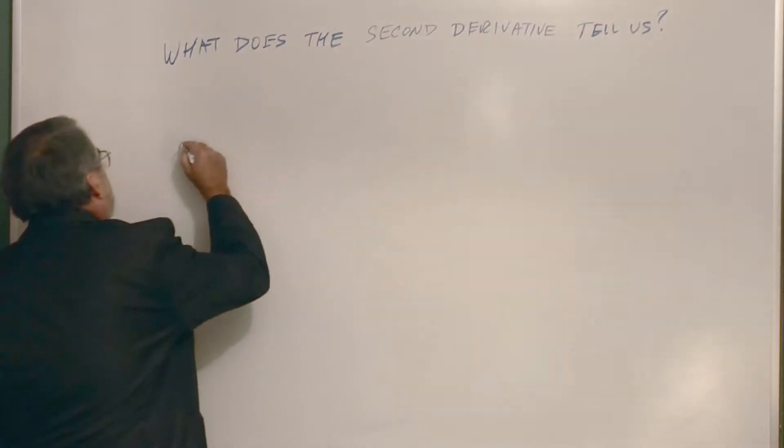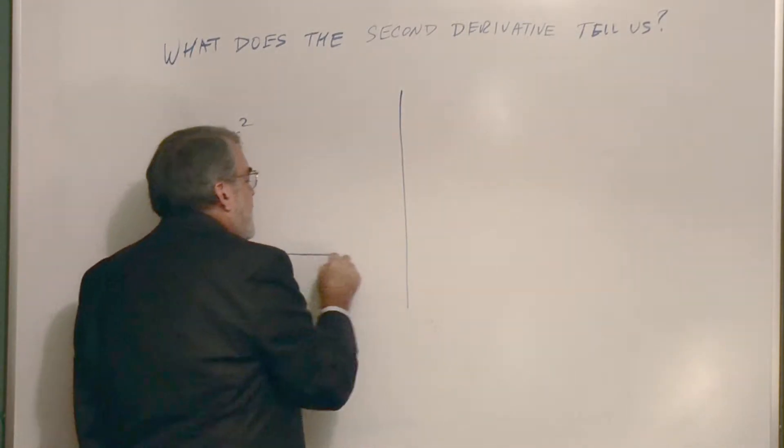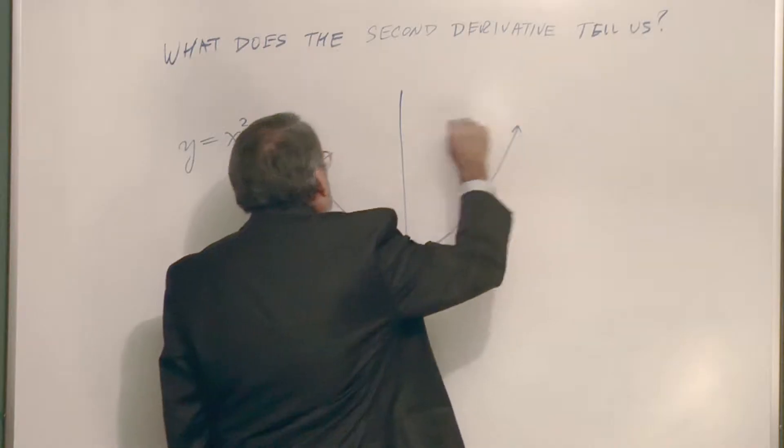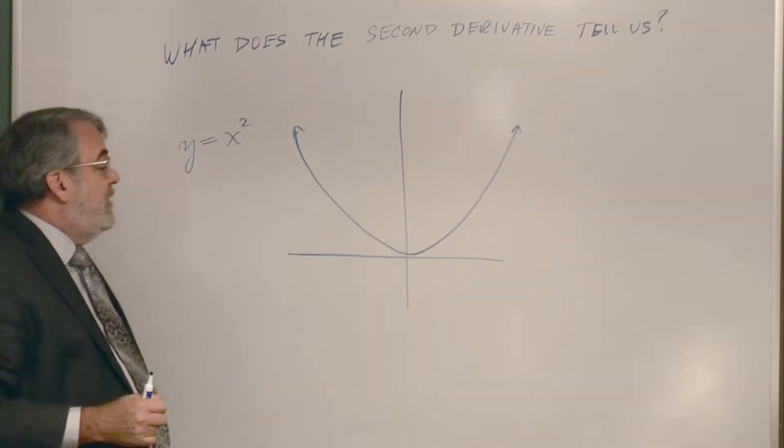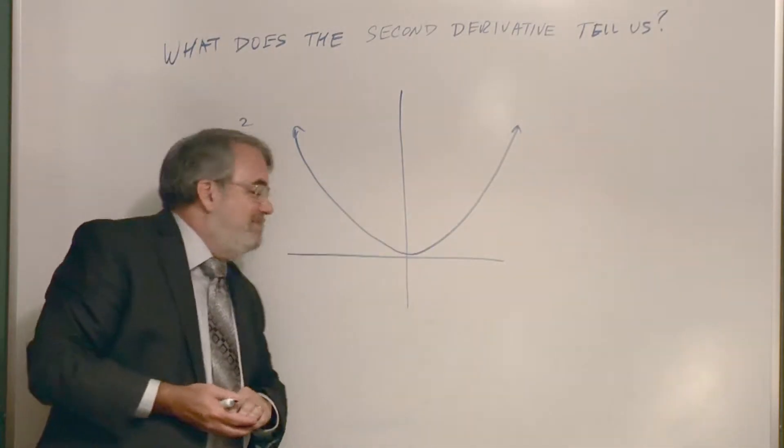So let me give you an example. y equals 2x squared. Everybody knows this function, right? So it's the basic parabola graph. It goes like this. And it looks like it's decreasing on the left, increasing on the right.